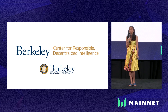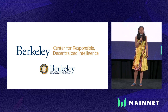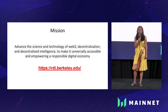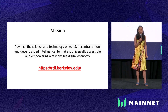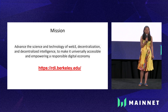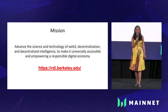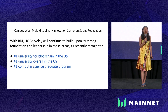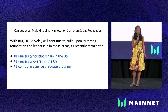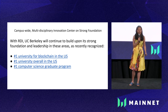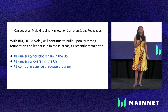I want to briefly mention a new center we have been building at Berkeley — a campus-wide center on blockchain and Web3 called the Center for Responsible Decentralized Intelligence, RDI. The mission for RDI is to advance the science and technology of Web3, decentralization, and decentralized intelligence to make it universally accessible and empower a responsible digital economy. You can learn more at rdi.berkeley.edu. RDI builds on Berkeley's strong foundation as the number one university for blockchain in the US.